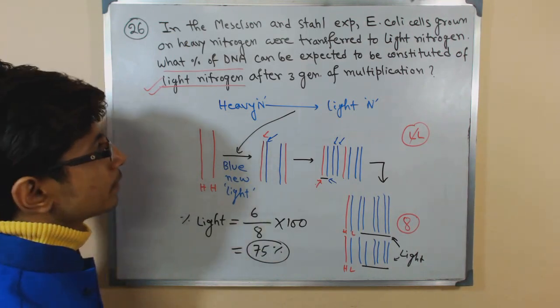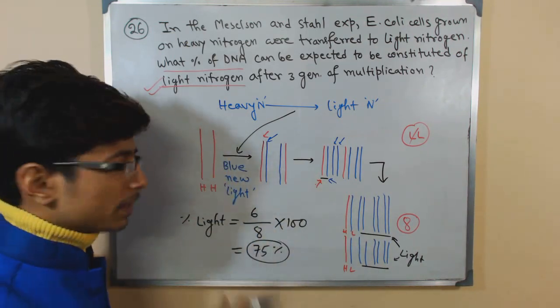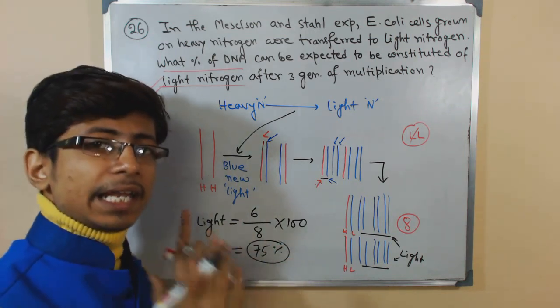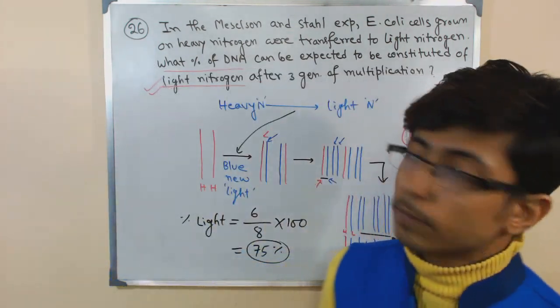So 75% of that population will contain light strands of DNA. And that is how you need to solve this type of question.